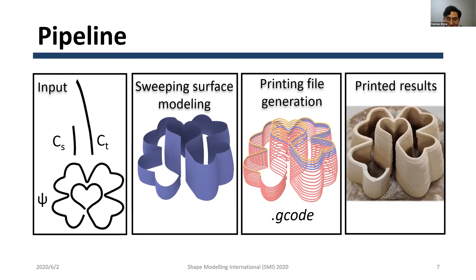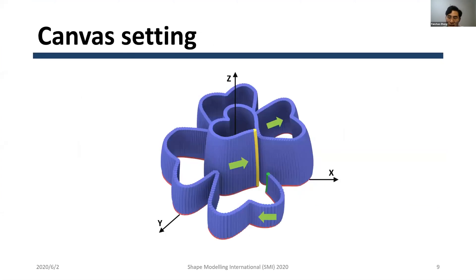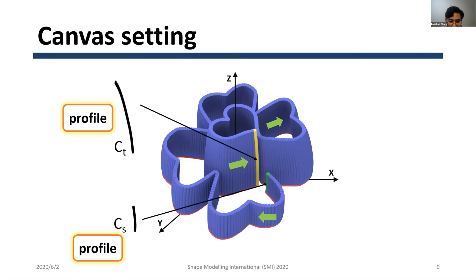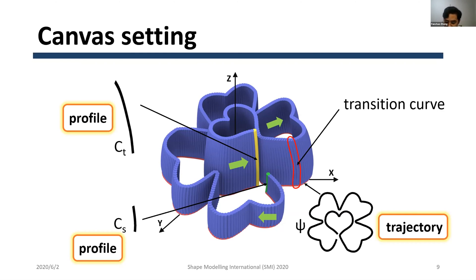I will now introduce the sweeping surface modeling and the problems that need to be solved. The canvas used to draw CS and CT corresponds to a plane across the Z-axis in world coordinates. The canvas used to draw phi corresponds to the X or Y plane. CS is located at the starting position of phi, and CT is located at the end position. Each blue vertical line in the figure represents a transition curve.